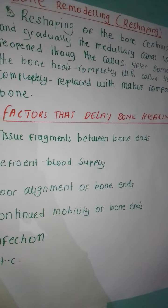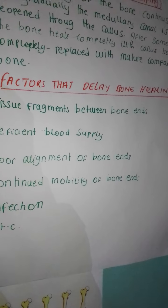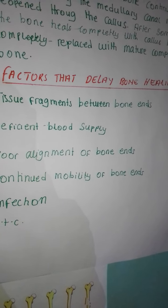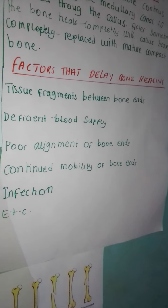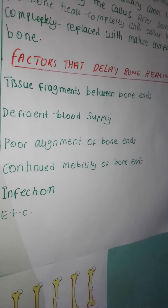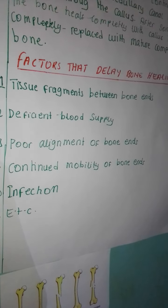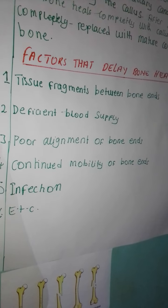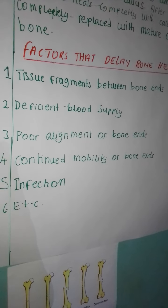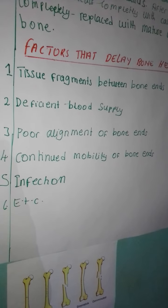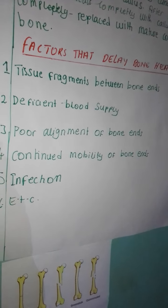What are the factors that can delay bone healing? Number one: tissue fragments between the bone ends may delay healing. Number two: deficient blood supply. Number three: poor alignment of the bone. Number four: continued mobility of the bone. Number five: infection. And there are many more factors not mentioned here.